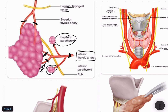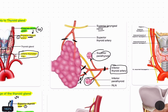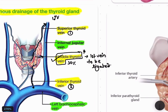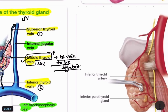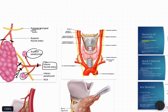Three important ligation questions to remember: one, the superior thyroid artery should be ligated near the gland; two, the inferior thyroid artery capsular branches should be ligated near the gland; three, the middle thyroid vein is the first vein to be ligated during thyroidectomy.